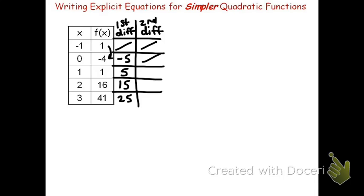For the second differences, negative 5 to positive 5, you need to add 10. And again, and again.